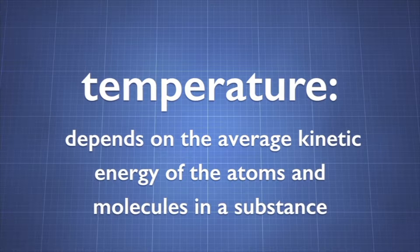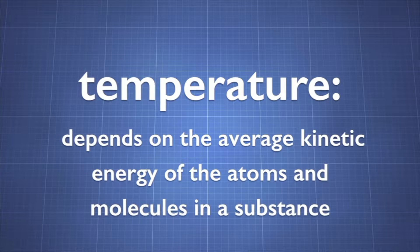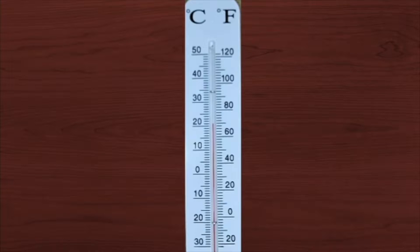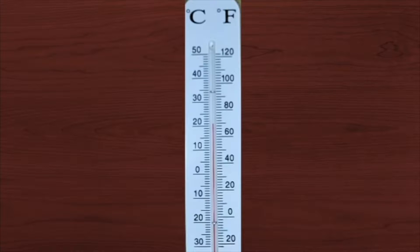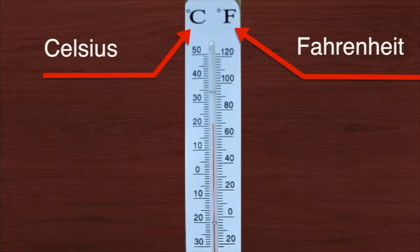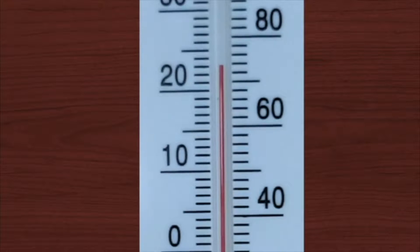Temperature depends on the average kinetic energy of the atoms and molecules in a substance. Temperature indicates how hot or cold a substance is. Temperature is measured with a thermometer and is measured in degrees Celsius, Fahrenheit, or Kelvin. As the temperature increases, the velocity of the atoms increases.